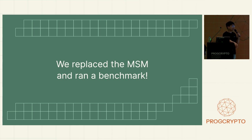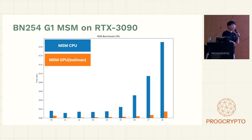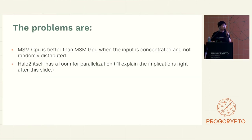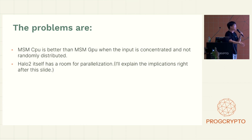We replaced MSM and ran a benchmark, and the results were pretty cool: MSM GPU runs 10 times faster than MSM CPU. But sadly, a simple replacement of MSM doesn't solve the problem. We pinpointed two issues. One is that MSM CPU is sometimes better than MSM GPU when the input is concentrated and not randomly distributed. The second is that Halo2 itself has room for optimization.